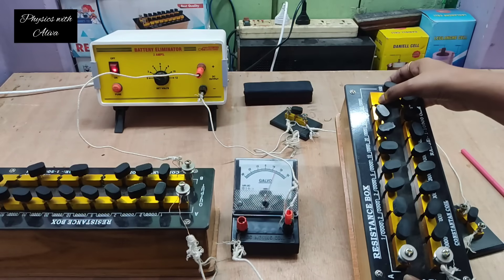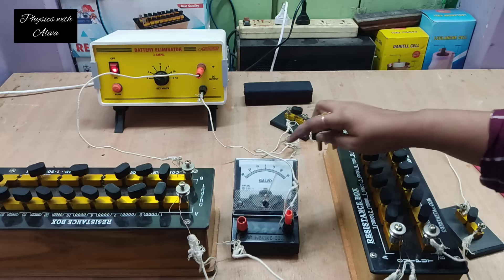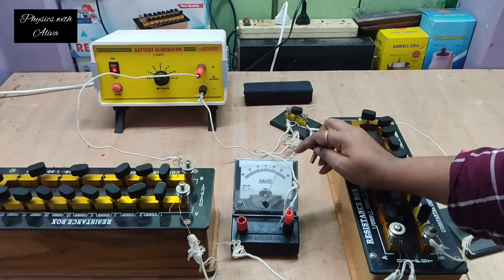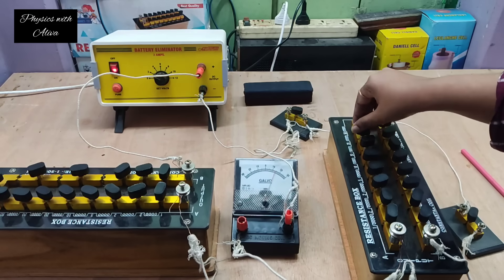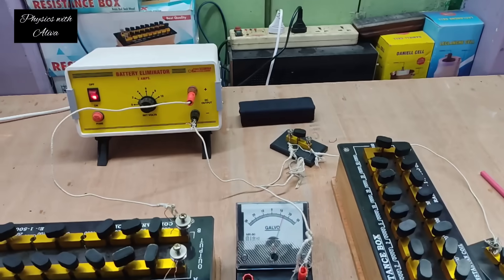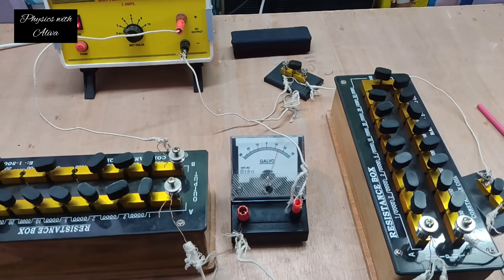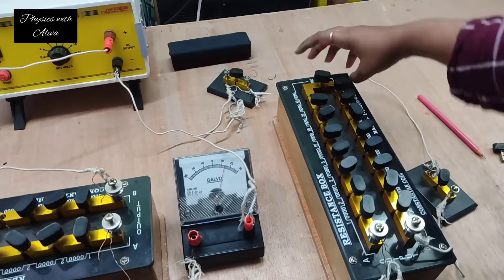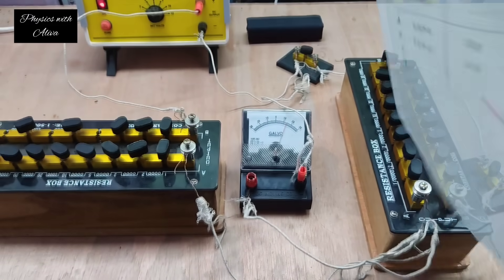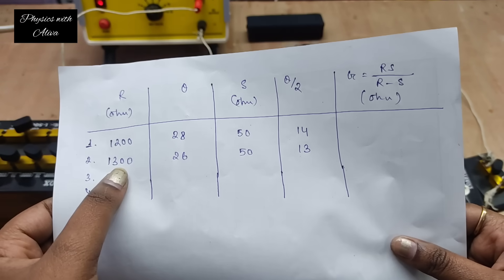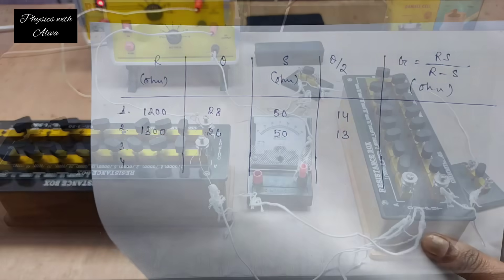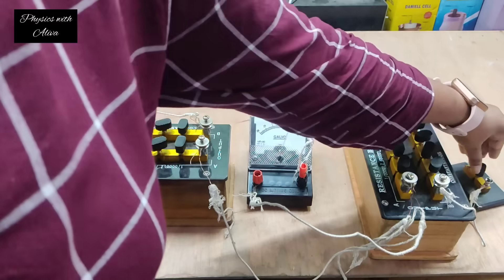Now we connect key K2. The resistance S is already set to 50 from the previous reading. We need to achieve θ/2 = 13, since θ was 26. We can see the deflection is 13. The value of S is 50. So our second set of readings: R = 1300, θ = 26, S = 50, θ/2 = 13.